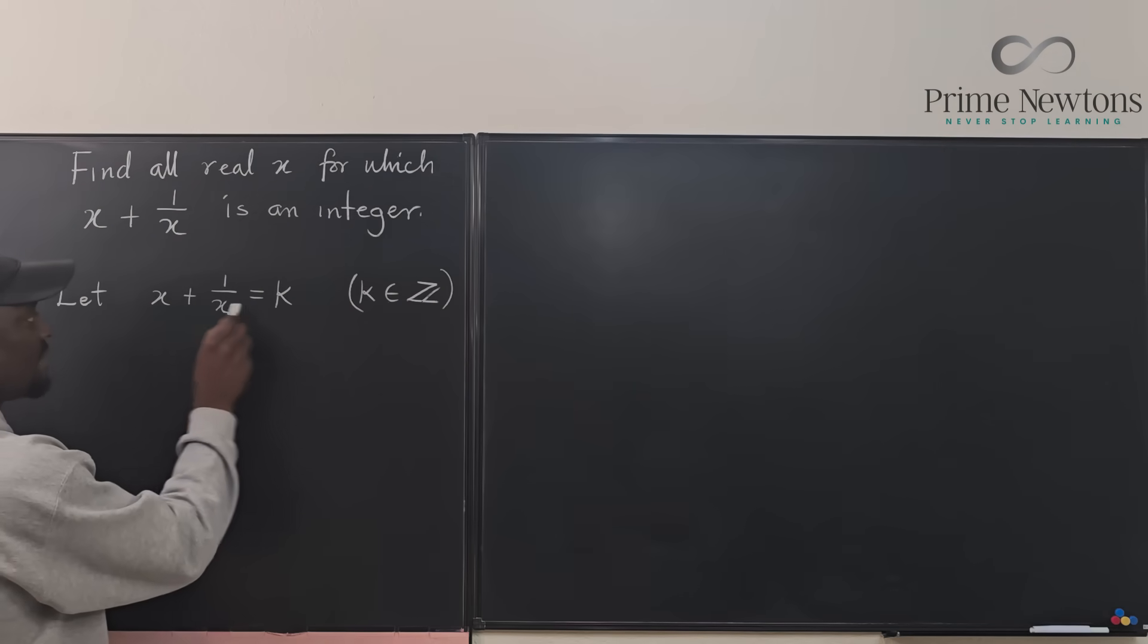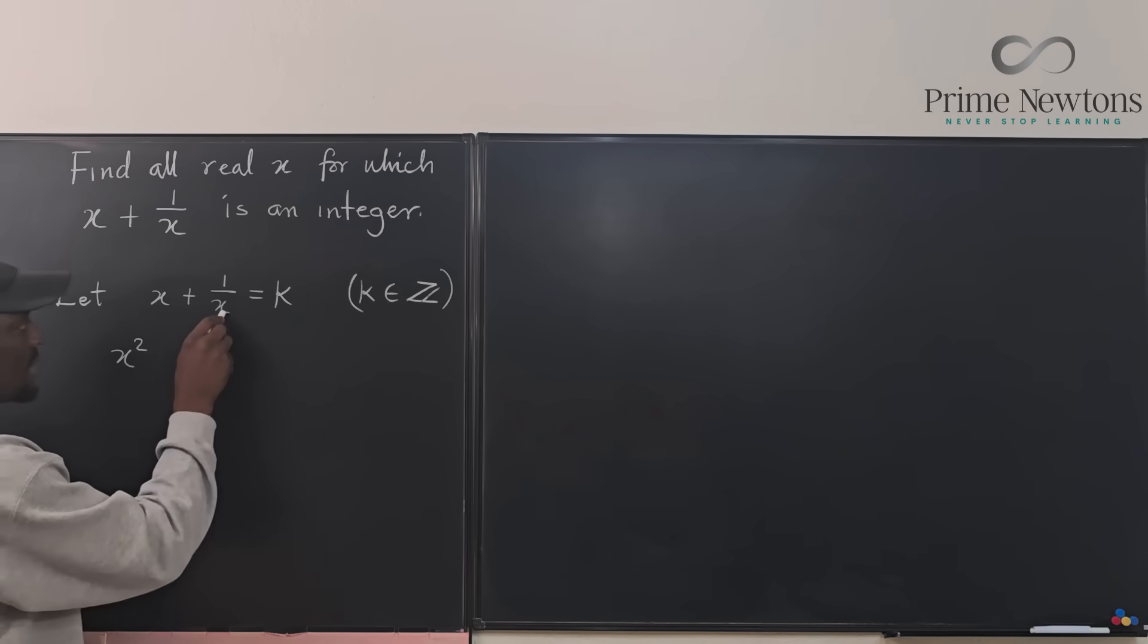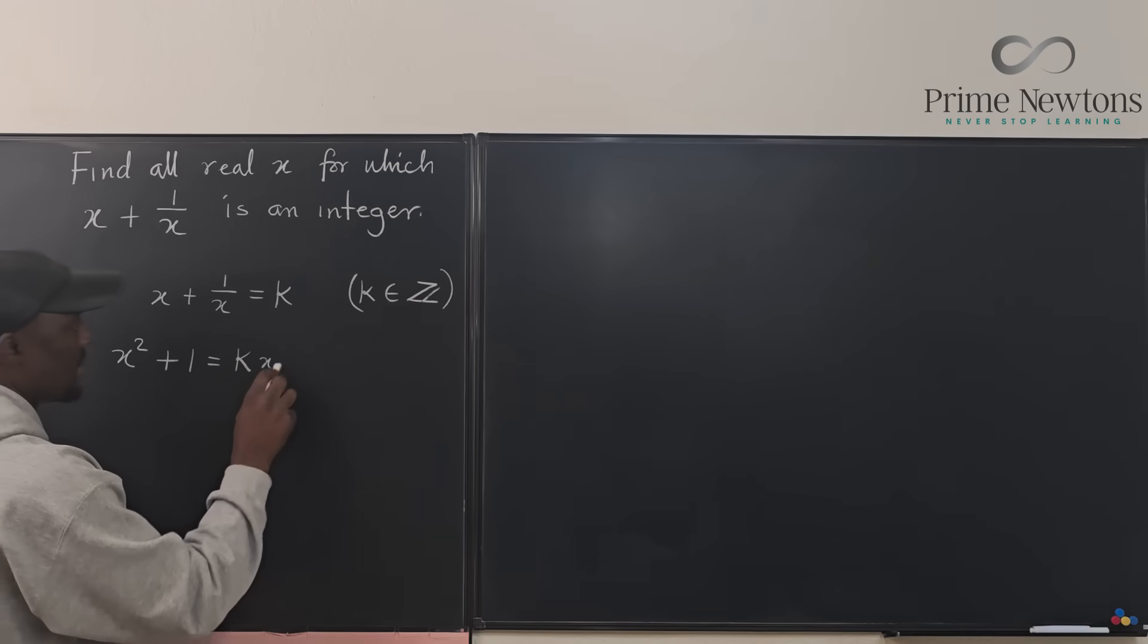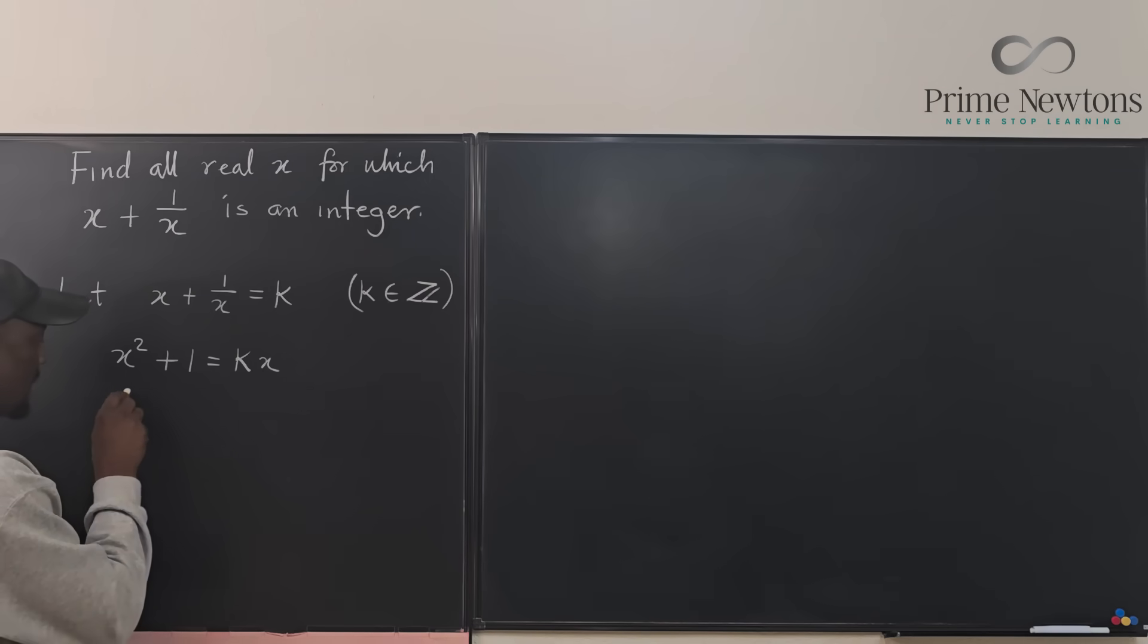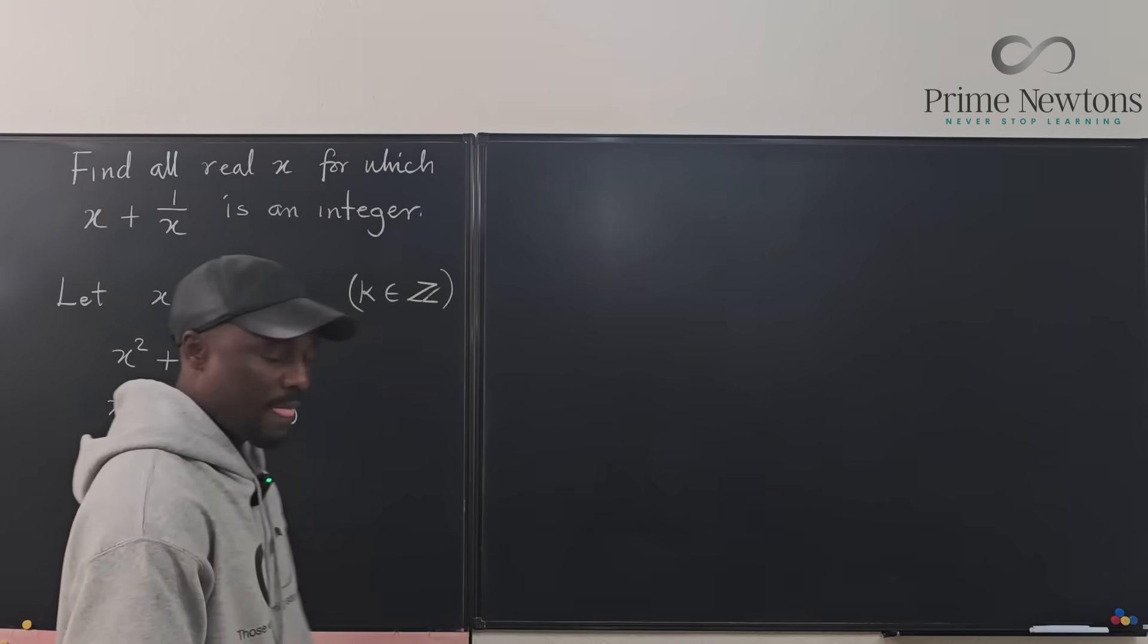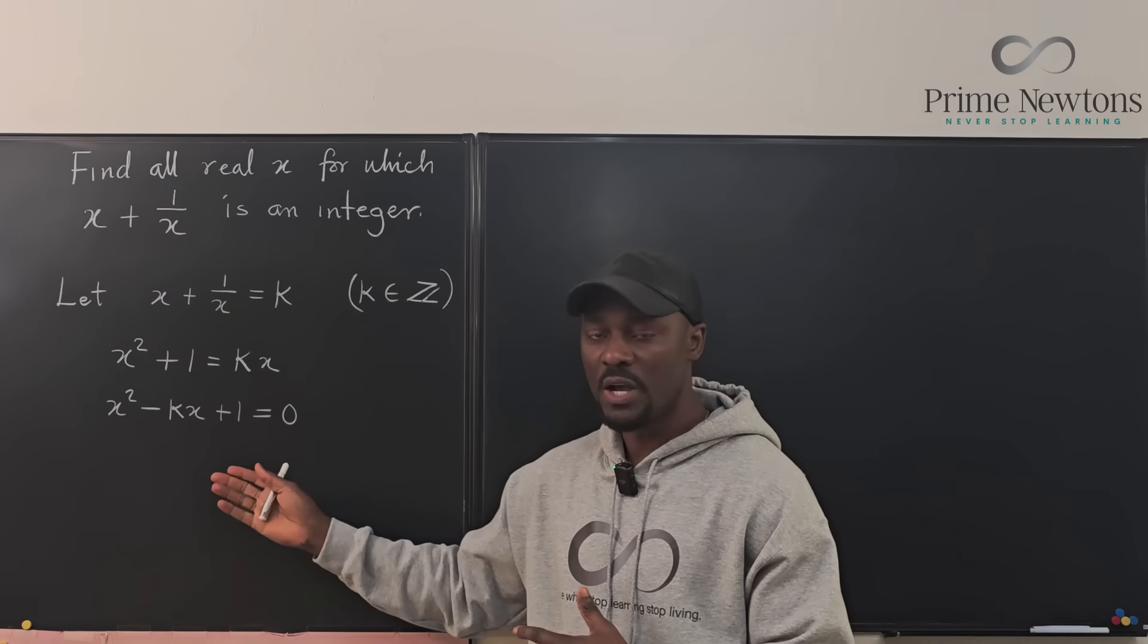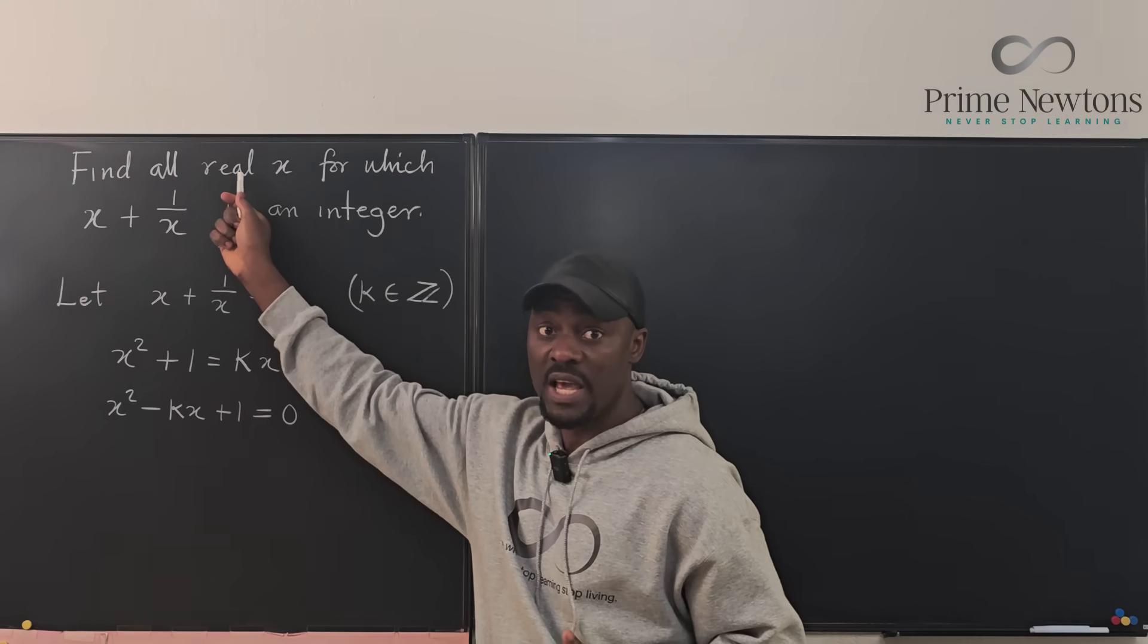If you multiply every term by x, this is going to end up being x squared plus 1 equals kx. If you make a quadratic out of this, you end up with x squared minus kx plus 1 equals 0. So now we have one equation with two unknowns. We don't know k, we don't know x, but we're looking for x.